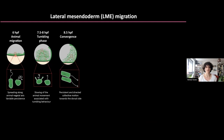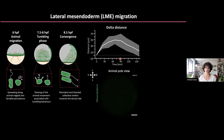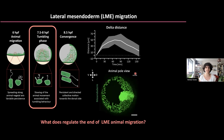Lateral mesendoderm, at the onset of gastrulation, initially migrates towards the animal pole, but it never reaches it because cells enter a tumbling phase in which migration slows down — preceding the next migratory phase, which is convergence. The tumbling phase lasts roughly 30 minutes to an hour. As you can appreciate in this animal pole view, the cells really don't reach the animal pole. My question is: what modulates the end of lateral mesendoderm migration?